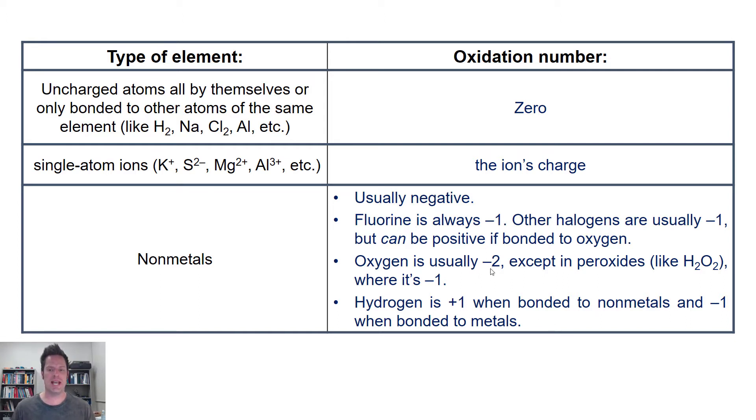Oxygen's oxidation number is usually negative two, except in peroxides such as hydrogen peroxide H2O2, where it's negative one. Please remember, if you have oxygen all by itself uncharged like O2, then the oxidation number for that oxygen is zero. I'm talking about oxygen that's in a compound with other elements bonded to it. Oxygen's oxidation number is usually negative two, except if you see it in hydrogen peroxide H2O2 or other peroxides, in which oxygen's oxidation number is negative one.